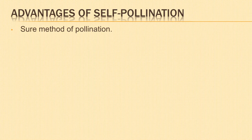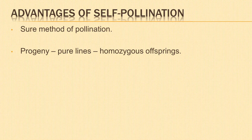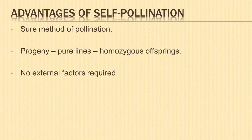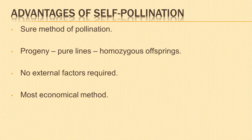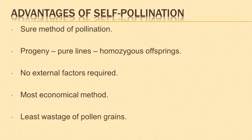Advantages of self-pollination: It is a sure method of pollination as there are least chances of failure. Self-pollination ultimately results in progenies which are pure lines, i.e. homozygous. It does not depend upon external factors for pollination. It is the most economical method for the plant because there is no necessity for wasting energy on formation of nectar, large attractive flowers, etc. Least wastage of pollen grains takes place during self-pollination.